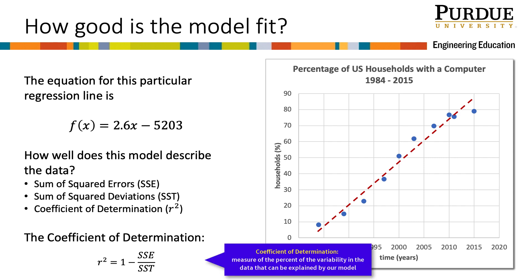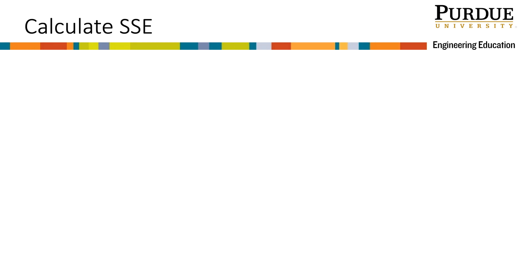The coefficient of determination is the measure that relates these and is our best measure of goodness of fit for the model. That equation is r squared equals 1 minus SSE divided by SST. As a reminder, r squared is a measure of the percent of the variability in the data that can be explained by the model and the closer this measure is to 1 or 100 percent, the better the fit of our linear model.